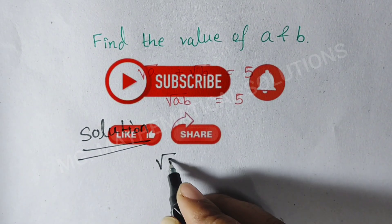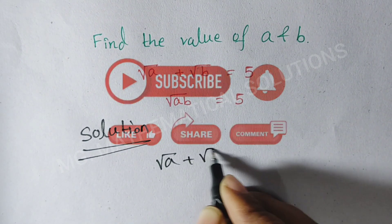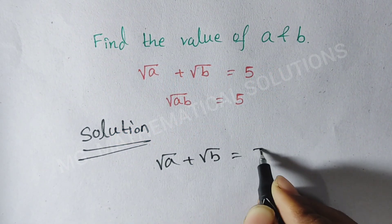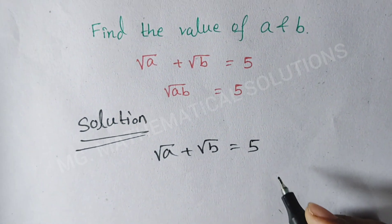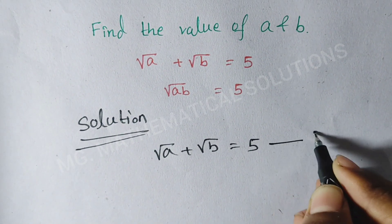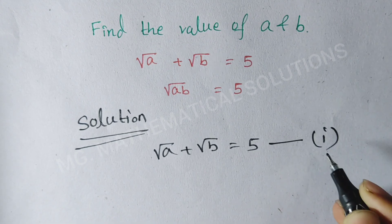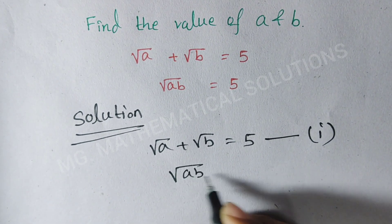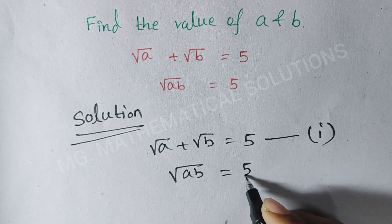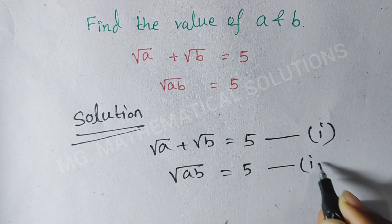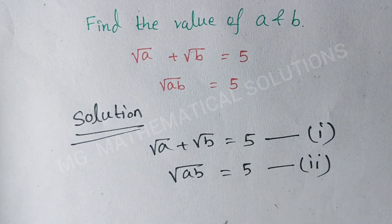Root a plus root b equal to 5 — we name this equation 1. And root ab equal to 5 — this is equation 2.